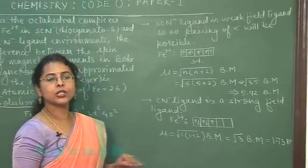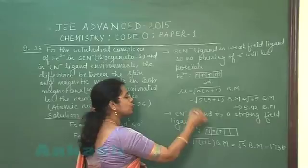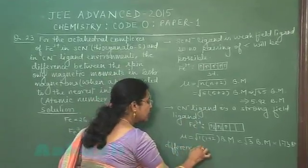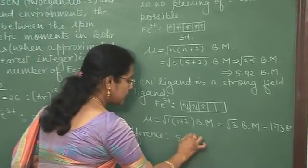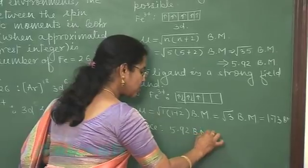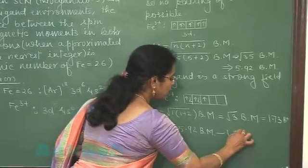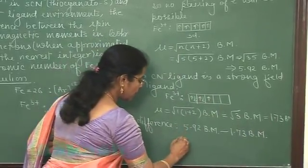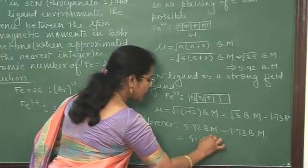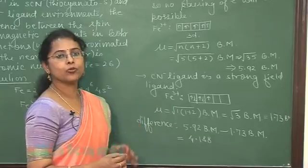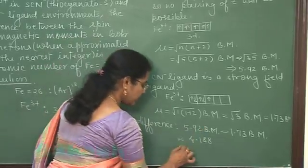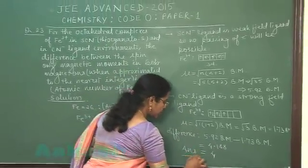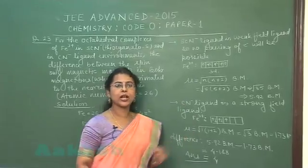Now, in this question, we need to find the difference of two spin magnetic moments. So this difference will be 5.92 Bohr magneton minus 1.73 Bohr magneton. The difference is coming out 4.188. And since we need to find the answer in a single digit answer, this single digit integer will be 4 and this will be the answer of the question. So in this question, answer will be 4.